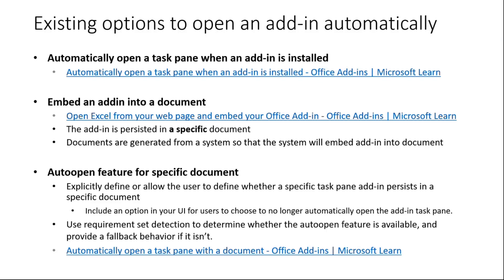Another way is that you can embed an add-in into a document. You can make XML changes to insert or embed an add-in into a specific Excel spreadsheet or Word document, so that whenever this document gets opened the add-in will be automatically installed and opened for that user. The problem with this is that the add-in will persist into the document all the time, and normally the user cannot turn off that auto-open feature themselves through this embedded approach unless they know how to change the underlying XML.